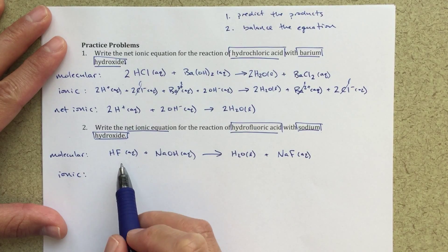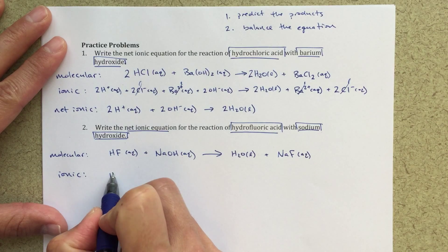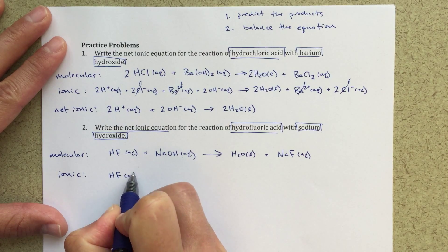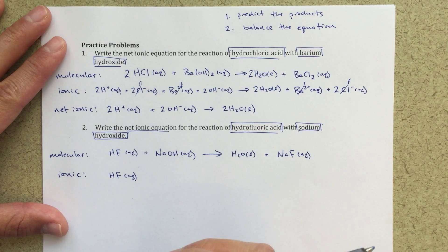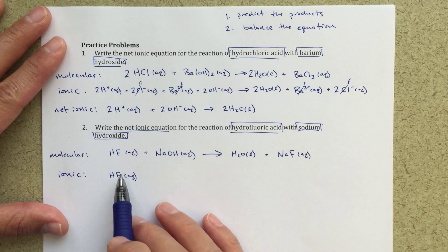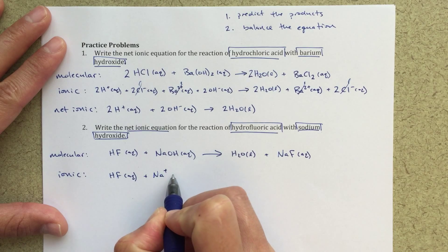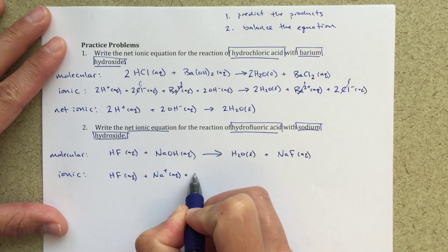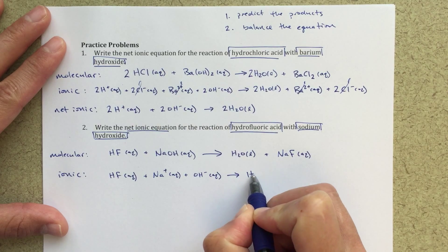If I want to write my ionic equation, here's where it gets a little confusing with HF. HF is a weak acid. Since HF is a weak acid, it will not ionize, it will not break into H+ and F- really that much. It will a tiny, tiny bit, but mostly it's just gonna be HF in solution, so we're gonna leave it like this. Then we'll write plus Na+ aqueous plus OH- aqueous reacts to form water.